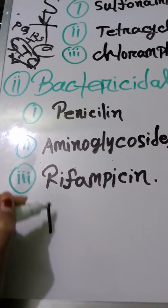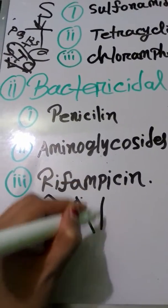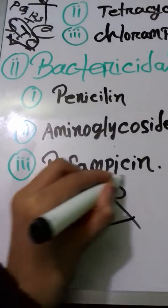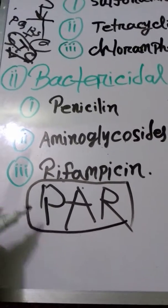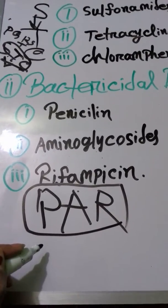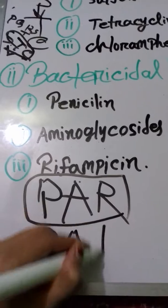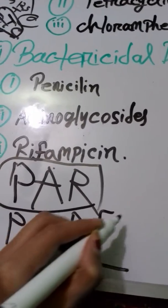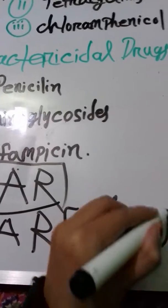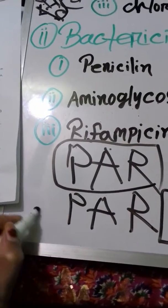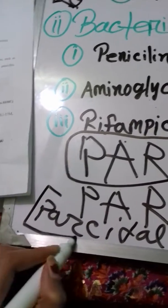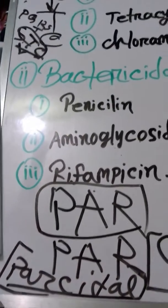For bactericidal drugs the mnemonic is P, A, R — penicillin is P, aminoglycosides is A, rifampicin is R. So you can remember this as P, A, R.